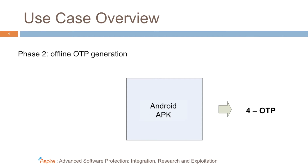In the second phase, the application works in an offline mode. Just by pressing a button, the user can ask for a new one-time password. The application will give him one, which the user can then use, for example, to log in onto a website or to sign a transaction in his e-banking application on his desktop or laptop computer.